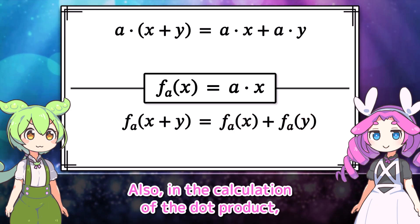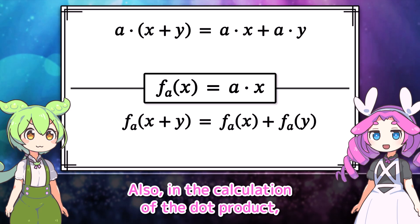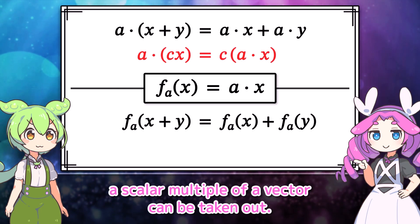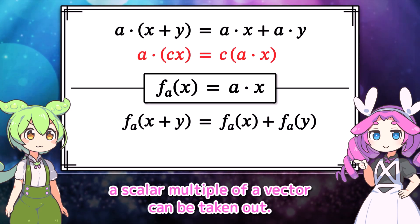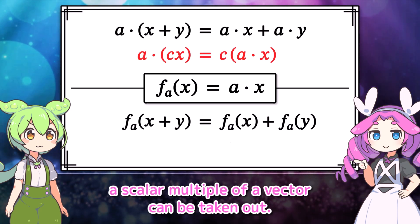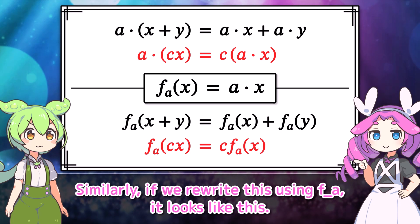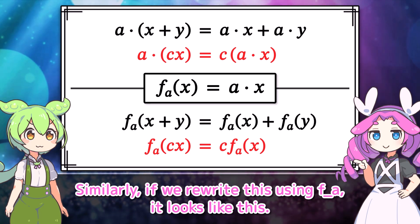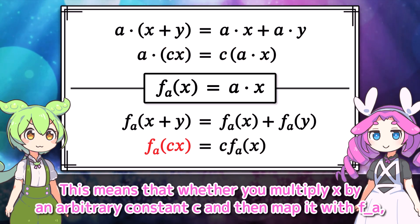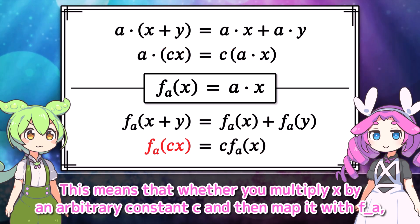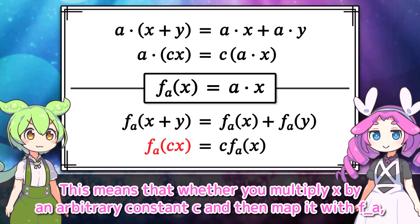If we rewrite it using f sub a, it looks like this. In other words, whether you add x and y first and then map them with f sub a, or map x and y individually with f sub a and then add the results, the outcome remains the same.